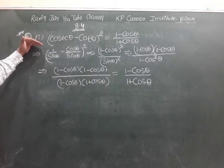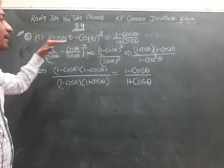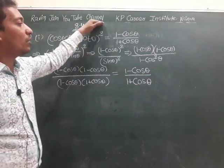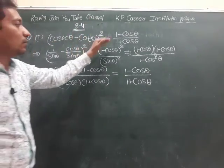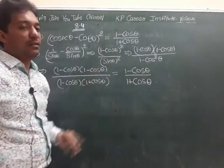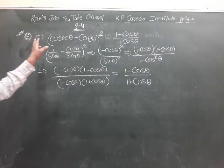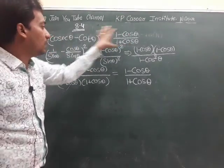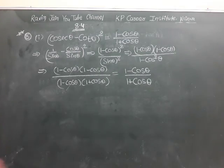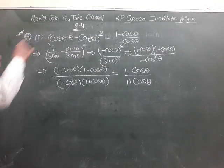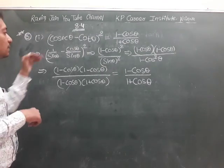The first part is: (cosec θ - cos θ)² = (1 - cos θ)(1 + cos θ). We need to prove this expression. Let's start with LHS.